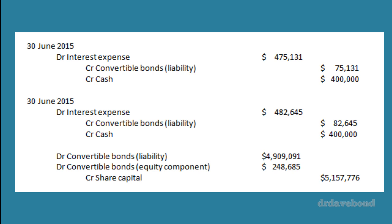From that point until conversion, you can forget about the equity component and the question runs exactly the same as a normal debenture. The opening balance times the market rate gives interest; the repayment is the coupon — that's the difference. You need to know whether to add or subtract this difference: you know you've got to end up with five million because the face has to be what you end up with. Because you started less than the face, you add that difference on.